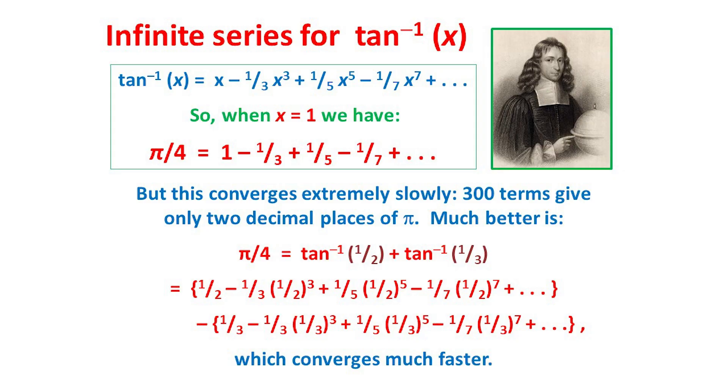But we can use Gregory's series to estimate pi if we substitute values other than 1. Remember that tan⁻¹ 1/2 and tan⁻¹ 1/3 add up to π/4. And so we can substitute the values x is 1/2 and x is 1/3 into the series for tan⁻¹ x, giving the two series shown here. And because of the increasing powers of 2 and 3 in the denominators, these series converge much faster, yielding good estimates for pi.